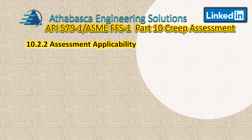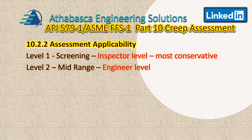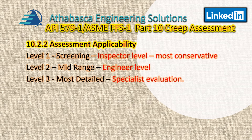In section 10.2.2 there is further discussion about assessment applicability. We have three levels of progressive screening: Level 1, which is the most conservative screening level giving a rough indication of where we are; Level 2, a mid-range engineer-level assessment; and Level 3, the most detailed assessment, done by a specialist. Part 10 CREEP assessment deals with all three of these levels.